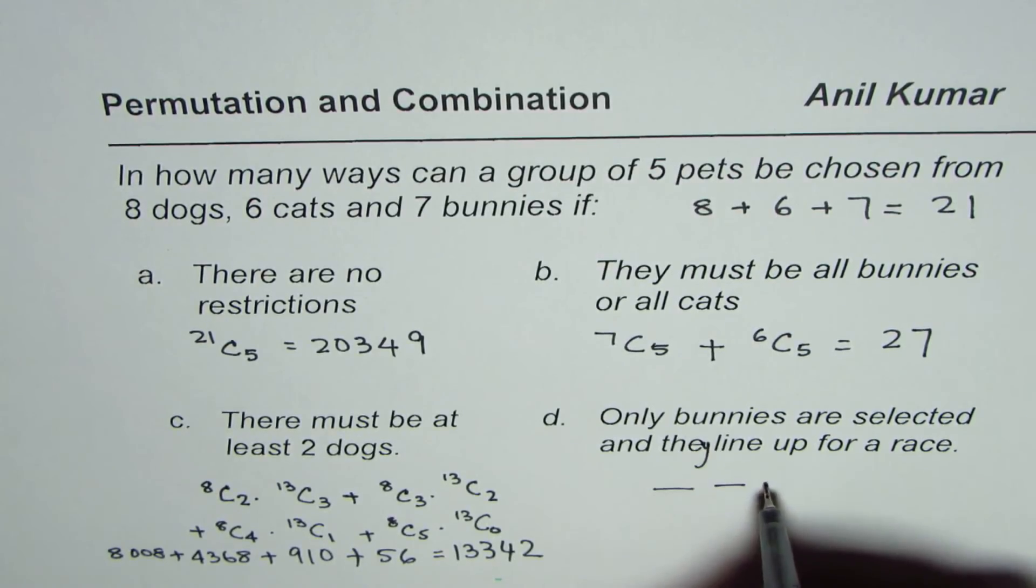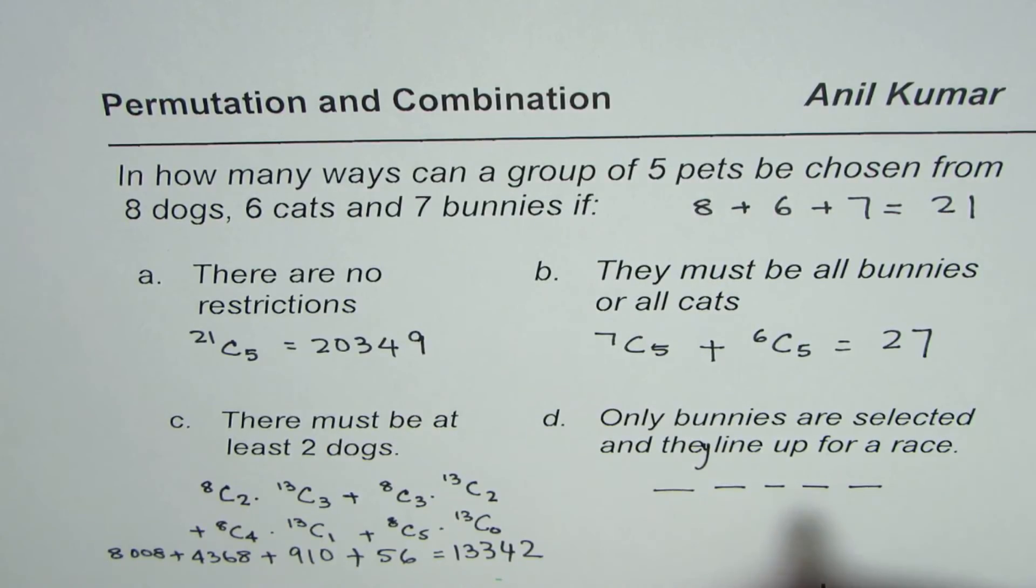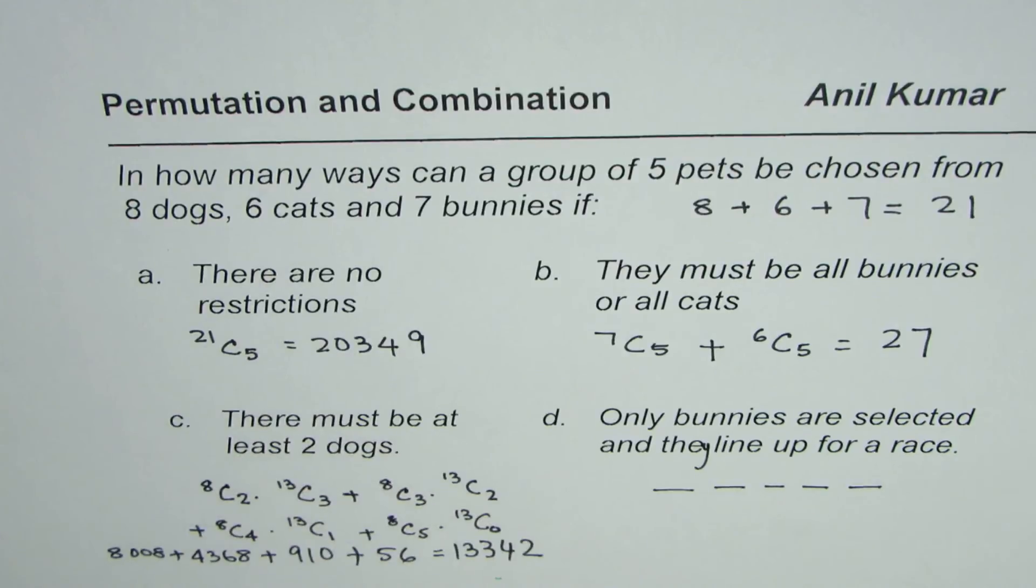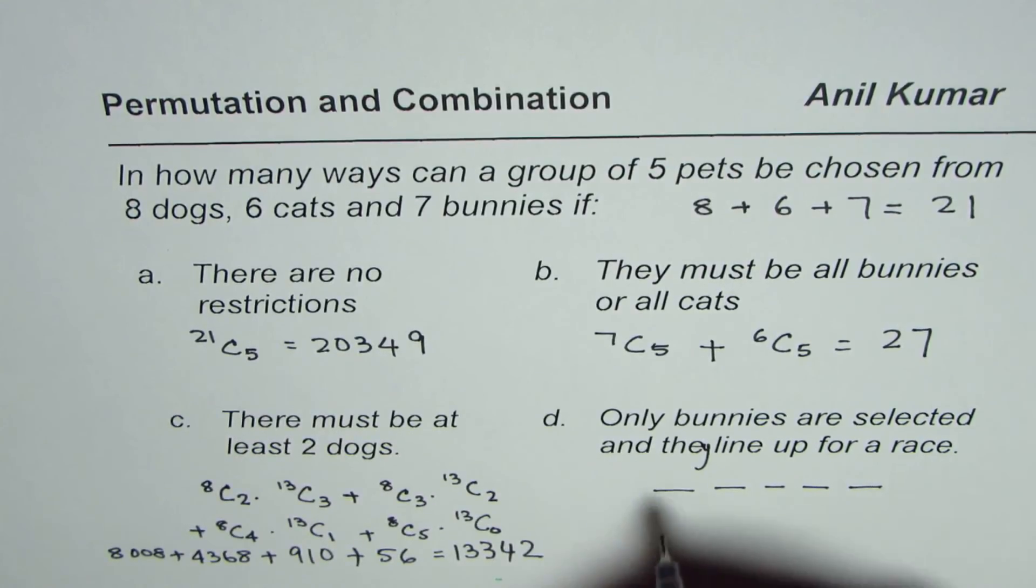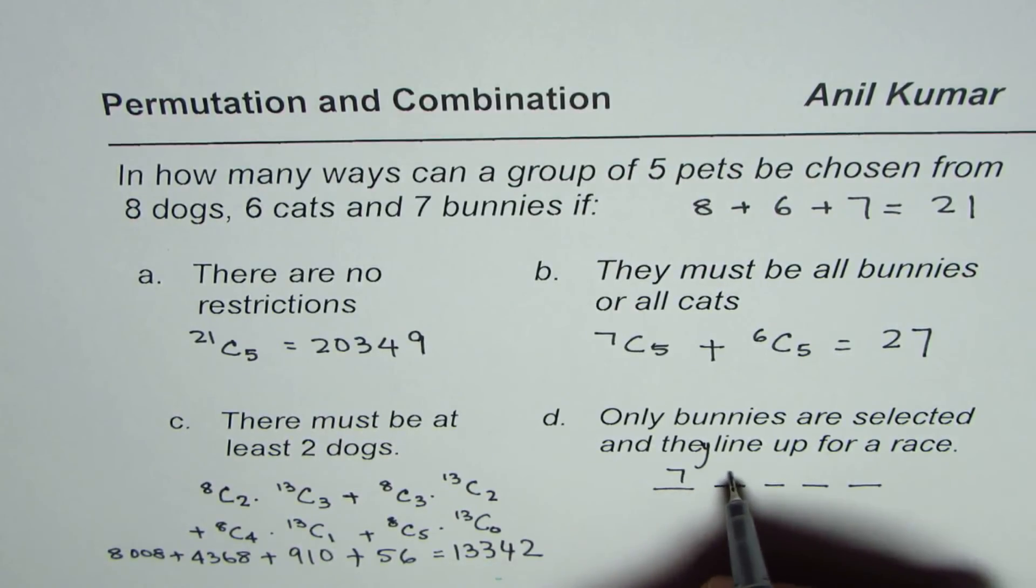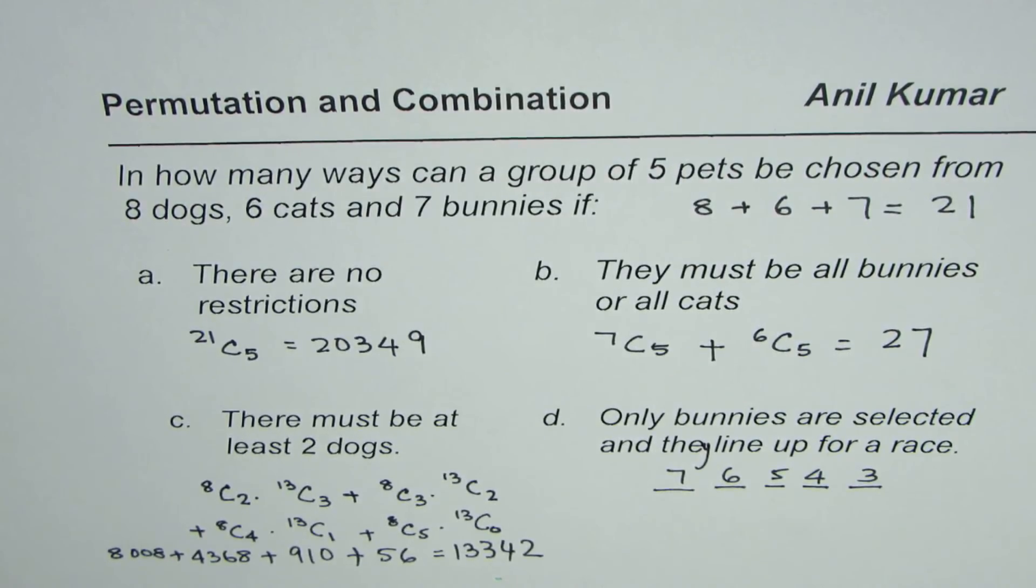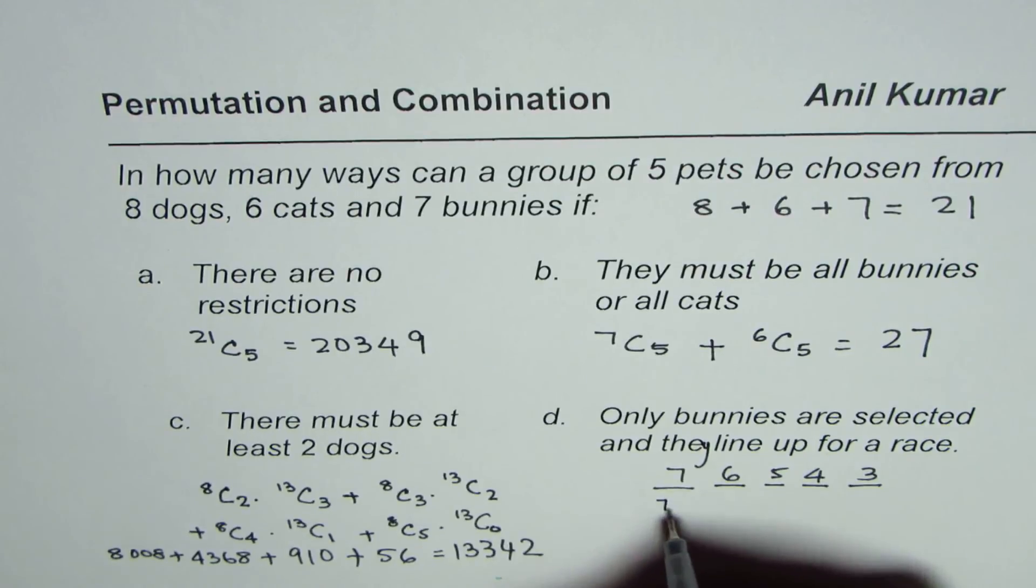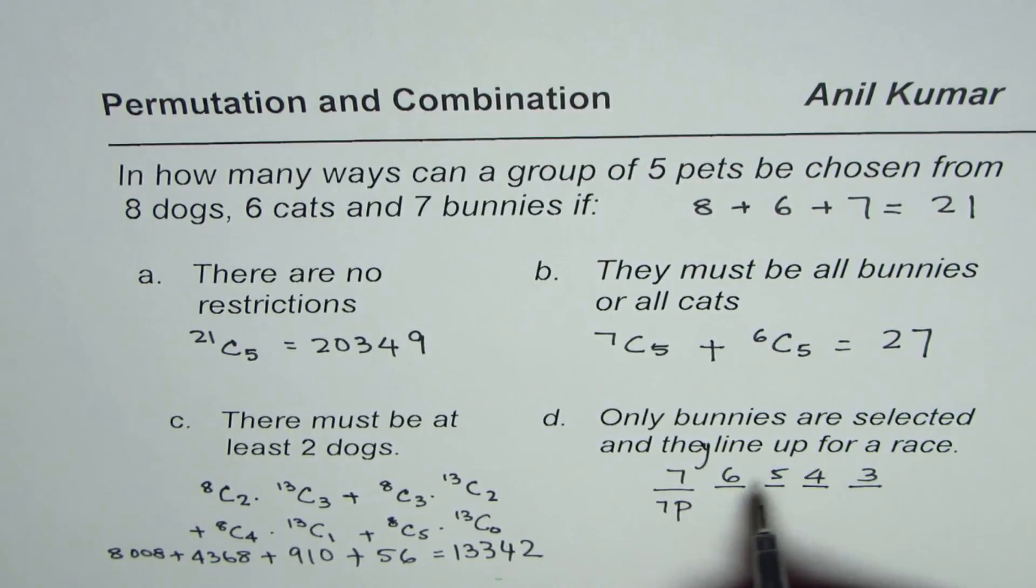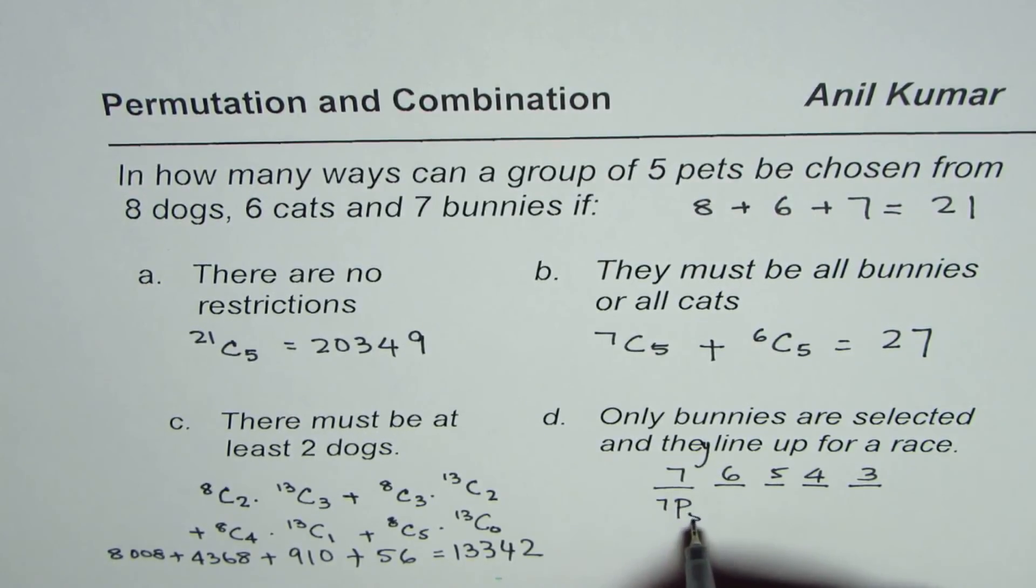So we are selecting 5 and we are selecting 1, 2, 3, 4, 5 and only bunnies. There are 7 bunnies in all. So that means it is 7, then you could 6, 5, 4, 3. So that could be multiplied or we could write from 7 is a permutation because the order matters, 7P5.